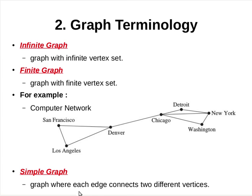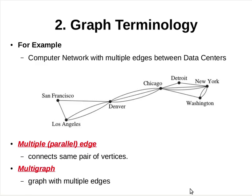Such a graph is called a simple graph, where each edge connects two different vertices. But in reality, a computer network may contain multiple links between data centers.